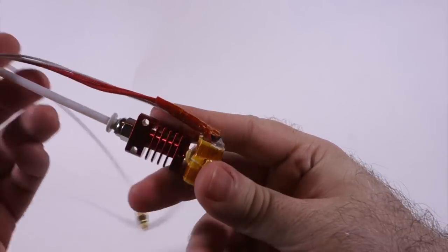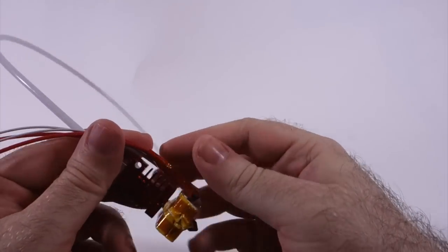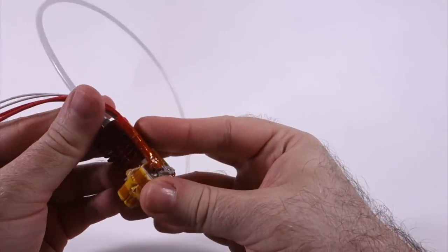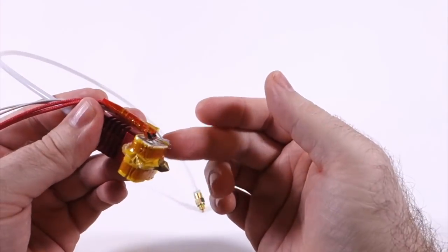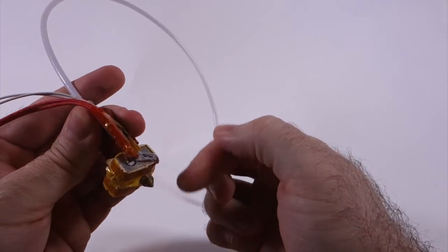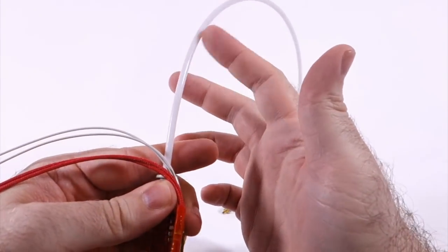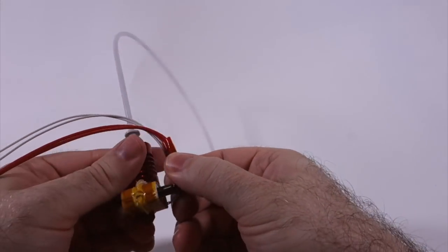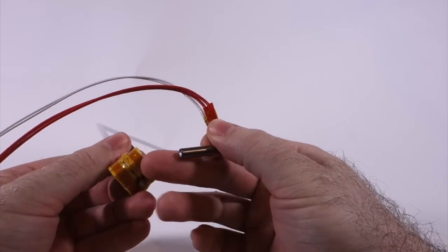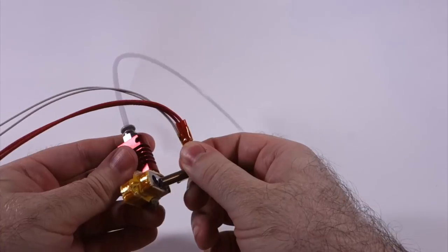This part right here is called the heater cartridge, and it heats up the hot end here, where the filament goes out. This is the tube where the filament comes through. This part right here, which you normally would have to unscrew to get out, was apparently faulty.